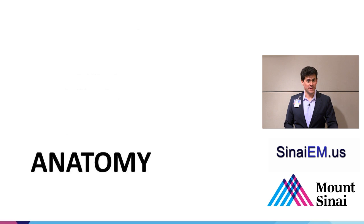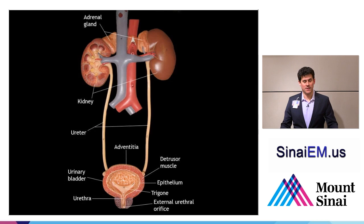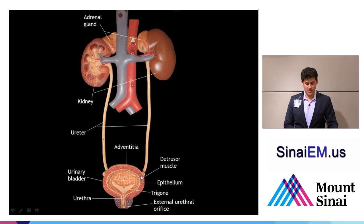Let's focus on the anatomy first. The kidneys lay in the left and right flanks, connected by the ureter down to the bladder. The bladder connects to the ureters at the trigone, near the base of the bladder, in contrast to how it's typically drawn where you see it coming in from the top. This will become important later on.